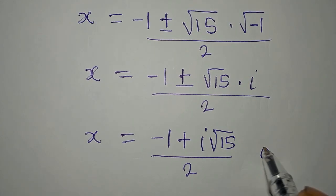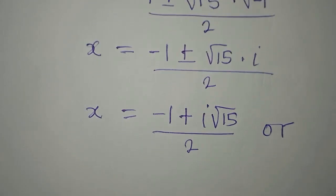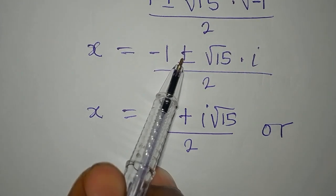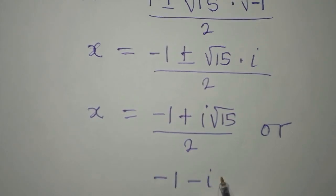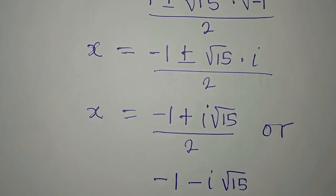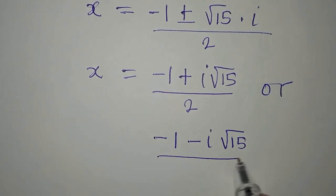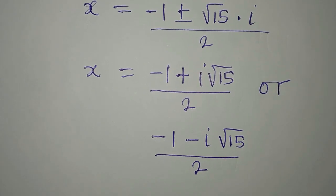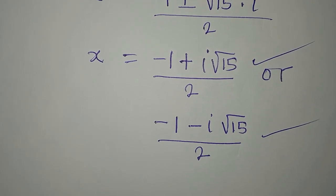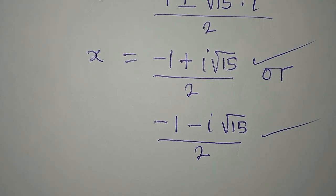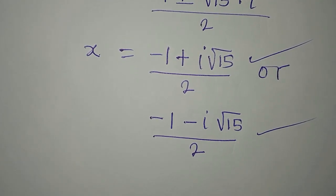Let's arrange this in a better way. So x equals minus 1 plus i square root of 15, all over 2, or x equals minus 1 minus i square root of 15, all over 2. So this is what we have — two complex solutions from this equation. And the first equation also gave us two solutions. Thank you for watching.